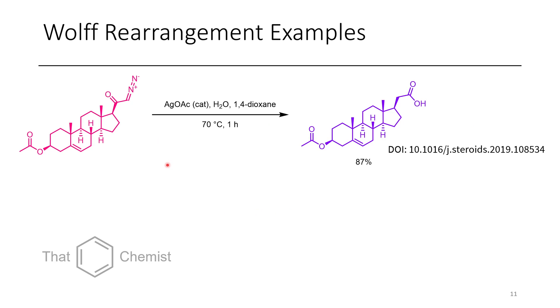Now some examples of the Wolff rearrangement include the treatment of this steroid derivative with silver acetate as a catalyst, and you can see that this just gives the carboxylic acid on the terminus. In the next example, we have silver benzoate as our catalyst, and 1,4-dioxane and water are used, converting this amino acid derivative into yet another amino acid derivative.